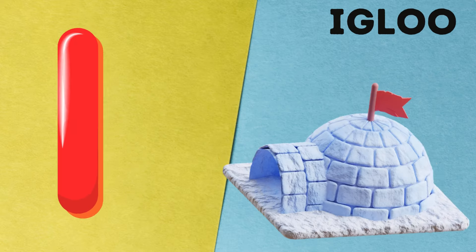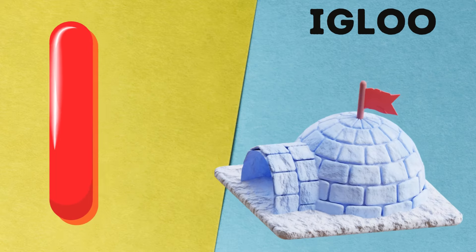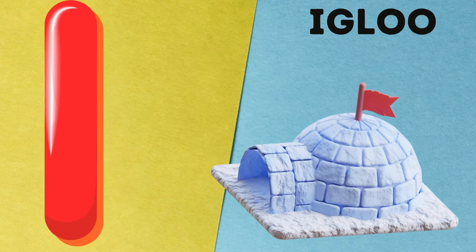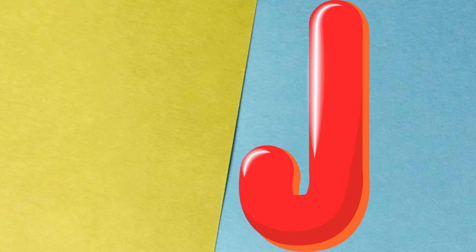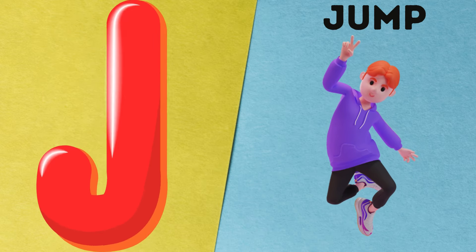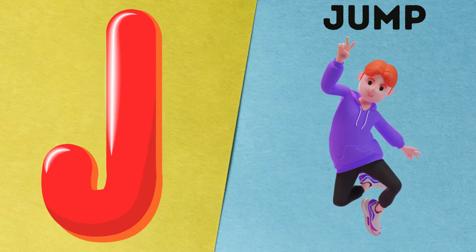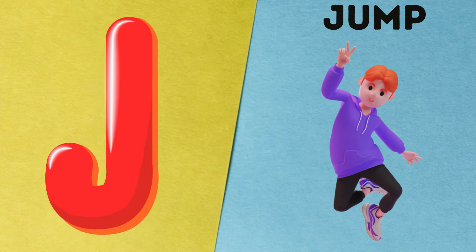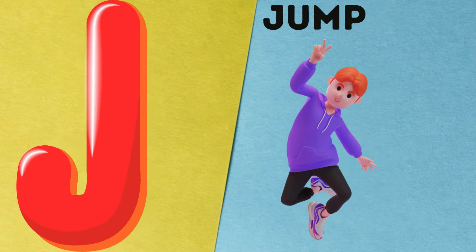I is for igloo, i-i-igloo. J is for jump, j-j-jump. K is for kangaroo, k-k-kangaroo. L is for lion, l-l-lion.